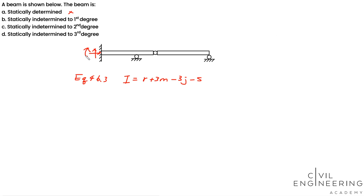A fixed support, we have three reactions: shear, axial force, and moment. And each roller support will give you one vertical reaction. So total will be five reactions.